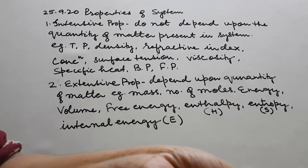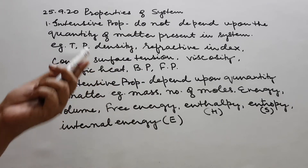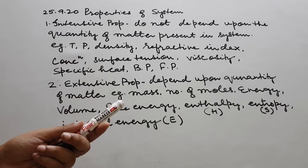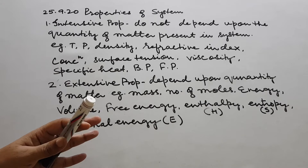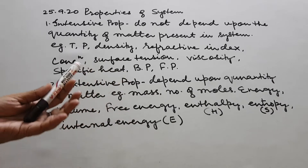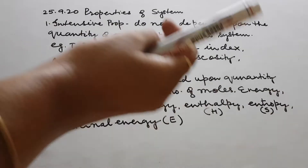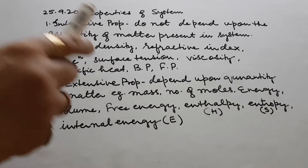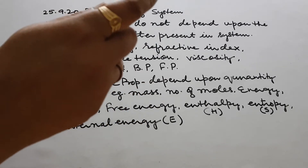Same viscosity: 50 ml of glycerin or 10 drops of glycerin will have the same viscosity. 50 ml of concentrated sulfuric acid and 1 liter of concentrated sulfuric acid will have the same viscosity. So ultimately, temperature, pressure, density, refractive index, concentration, surface tension, viscosity, and specific heat are all intensive properties. Specific heat is the amount of energy required to raise the temperature of 1 gram of any substance by 1 degree Celsius — so it does not depend upon the quantity of matter. Water, whether 2 drops or 1000 liters, will all have the same specific heat.